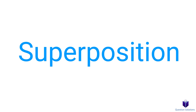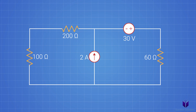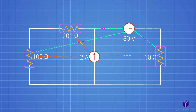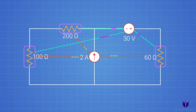Let's talk about superposition and how we can use it to solve circuits. In this circuit, we see that we have a current source and a voltage source. Because it has two sources, in very simple terms, each of these resistors gets some voltage and current from each source. In other words, there is an effect on the resistors from each of these sources.